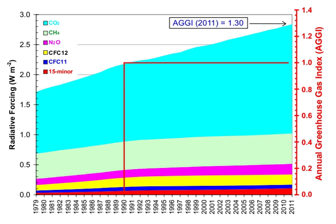The global warming potential depends on both the efficiency of the molecule as a greenhouse gas and its atmospheric lifetime. GWP is measured relative to the same mass of CO2 and evaluated for a specific timescale. Thus, if a gas has a high radiative forcing but also a short lifetime, it will have a large GWP on a 20-year scale but a small one on a 100-year scale. Conversely, if a molecule has a longer atmospheric lifetime than CO2, its GWP will increase when the timescale is considered.